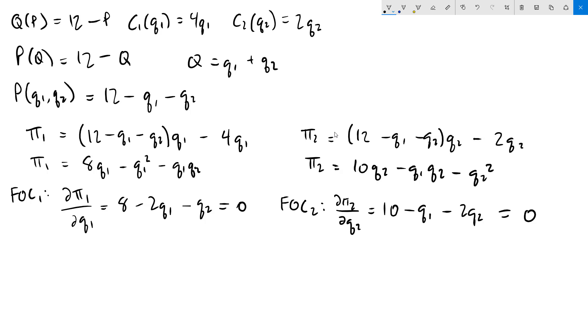We're almost done with part A of the problem, which asks us to find the best response functions. For firm 1's best response function, we need to solve firm 1's first order condition for q1. So I'm going to add 2q1 to both sides, 2q1 equals 8 minus q2, and then divide everything by 2. So we'll get q1 star, for the best response function, equals 4 minus q2 over 2.